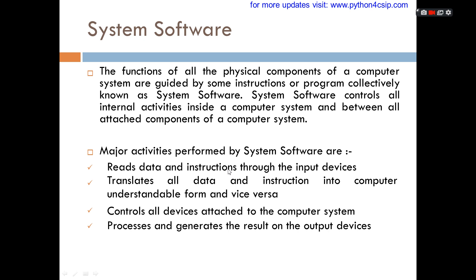The system software reads every command from the keyboard. The application software gives commands to us to perform tasks, but the system software wakes up the system and gives all the commands to the input unit — keyboard — to accept all the details provided by the user. The keyboard and mouse are the input units which read data and instructions. This data collected from the keyboard then has to be processed by the central processing unit.